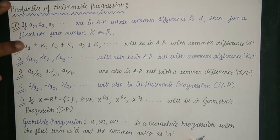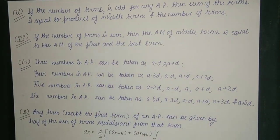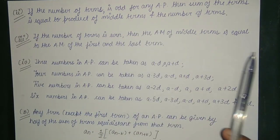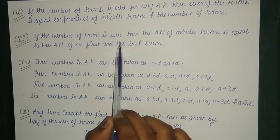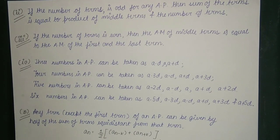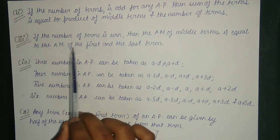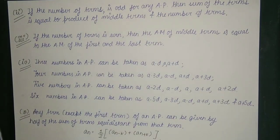If the number of terms is odd for any AP, then the sum of terms is equal to the product of the middle term and the number of terms. If the number of terms is even in an AP, then the arithmetic mean of the middle two terms is equal to the arithmetic mean of the first and the last term. For example, with eight terms, the arithmetic mean of the fourth and fifth term equals the arithmetic mean of the first and eighth term.